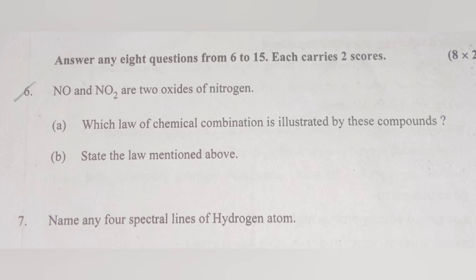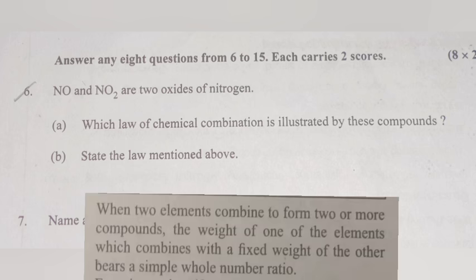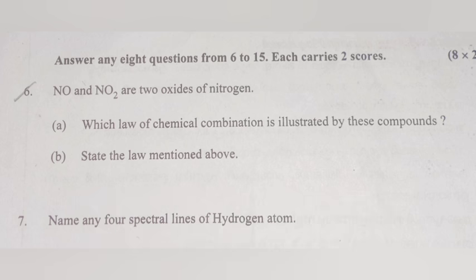Part B: State the law mentioned above. Answer: When two elements combine to form two or more compounds, the weight of one of the elements which combines with the fixed weight of the other element are in a simple whole number ratio.